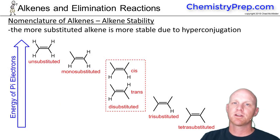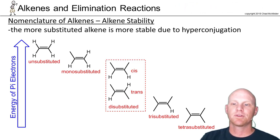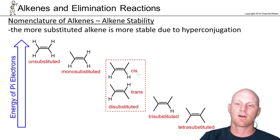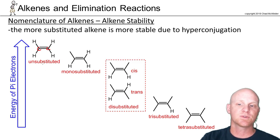Next we want to have a brief discussion on the stability of alkenes, because they're going to come up in the context of our elimination reactions in a little bit. It turns out their stability can be related to how substituted they are. In this case, your sp2 carbons can be bonded to two groups each, and if all four of those are hydrogens, we say it's unsubstituted.